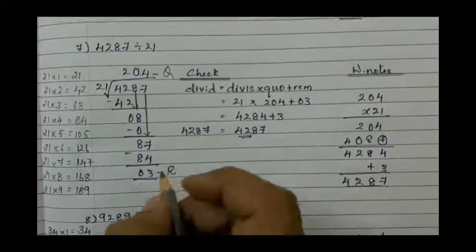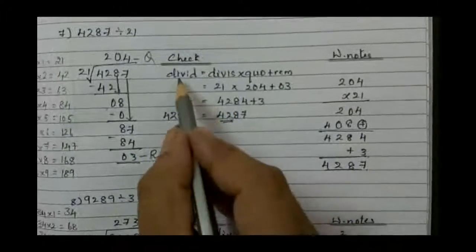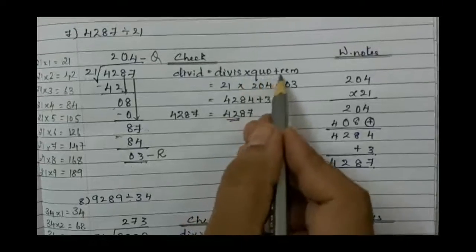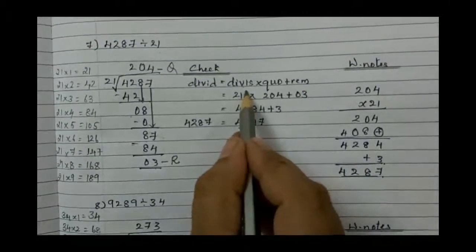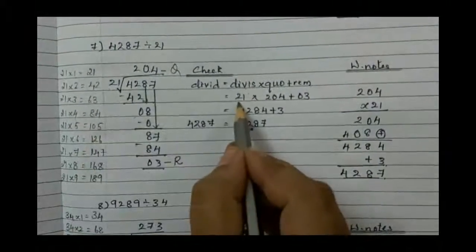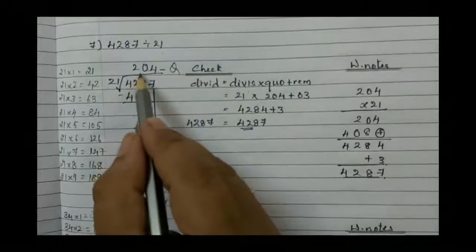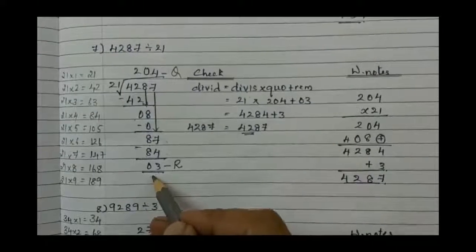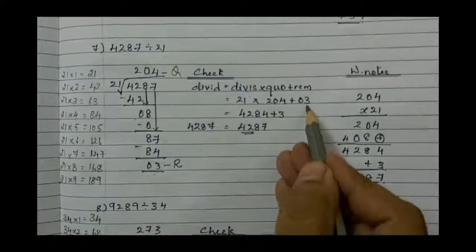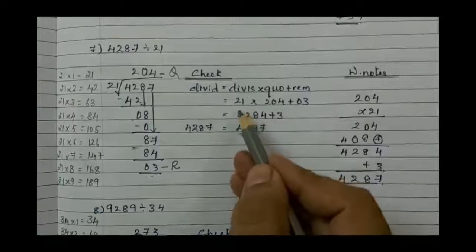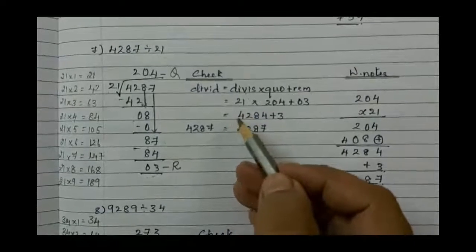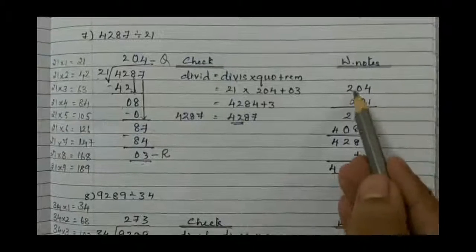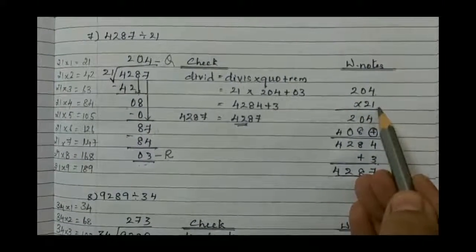Now the next step is to check. Write down the formula: Dividend equals divisor into quotient plus remainder. Divisor is 21, quotient is 204, plus remainder 3. This is the formula. How will you check? By working note.